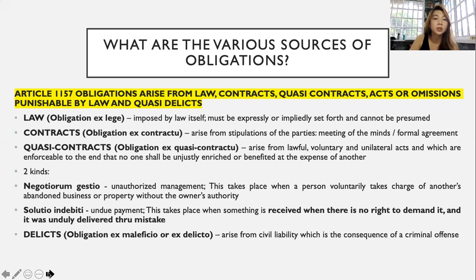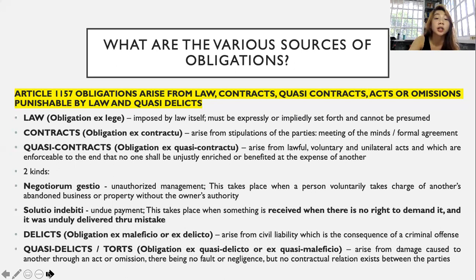Then we have delicts, or obligations that arise from crimes. These involve civil liability as a consequence of a criminal offense, also stated in the Revised Penal Code. Article 100 of the Revised Penal Code says that every person criminally liable for a felony is also civilly liable. Finally, we have quasi-delicts, also called torts — obligations which arise from damage caused to another through an act or omission, there being fault or negligence, but no contractual relation exists between the parties. This will be discussed more later.